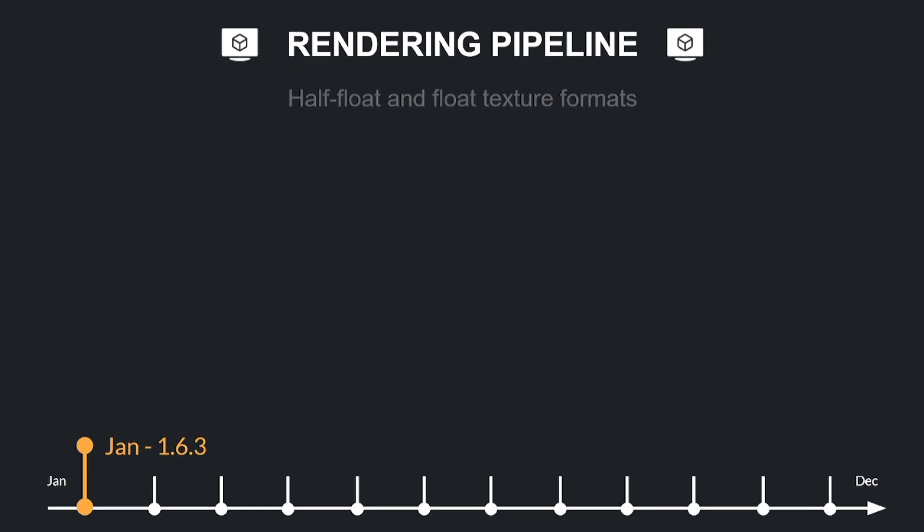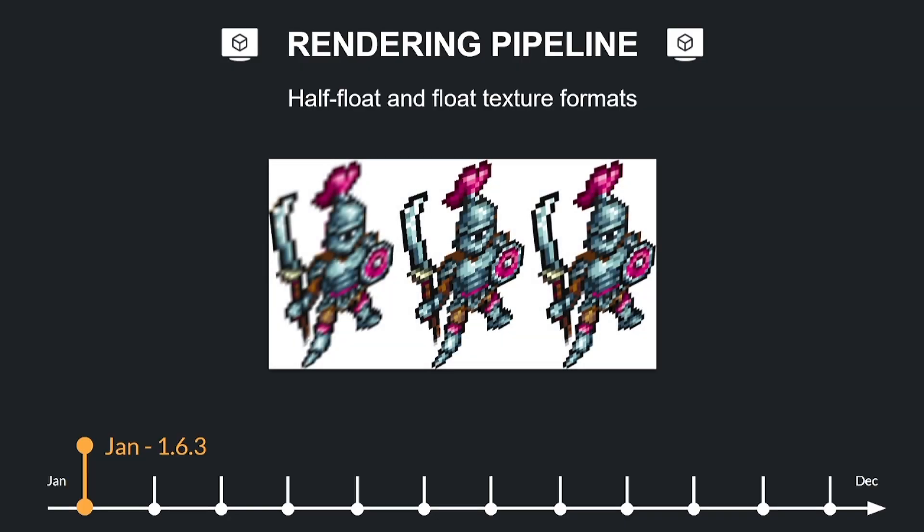As we are still in the topic of graphics components, it's worth highlighting all the works that Default made for the rendering pipelines and shaders development in 2024. Default now supports half float and float texture formats on OpenGL ES 2.0 and WebGL 1.0, so devices can now render floating point textures if they support the necessary extensions. This adds compatibility for 16-bit and 32-bit float textures on older devices.